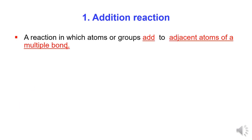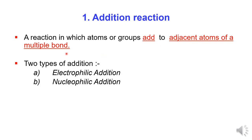Number 1: Addition reaction is a reaction in which atoms or groups add to adjacent atoms of a multiple bond. There are 2 types of addition reaction: A. Electrophilic addition, and B. Nucleophilic addition.